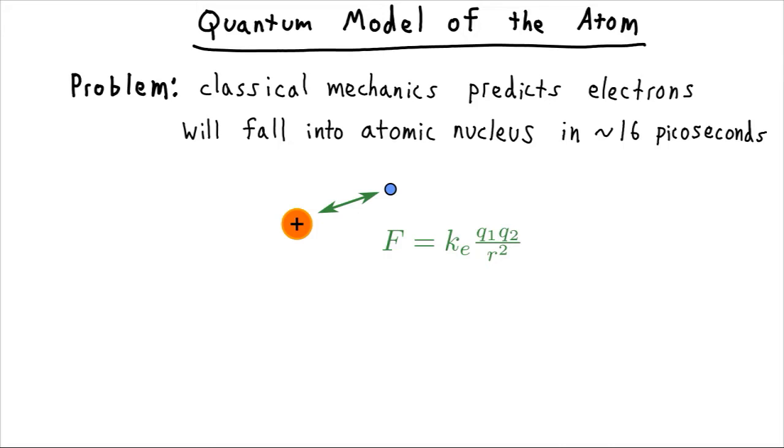So classical mechanics predicts electrons will fall into the nucleus and they'll do so very rapidly within about 16 picoseconds. So this is a problem because matter is stable, so how can classical mechanics predict this very bizarre unphysical result and still be correct?